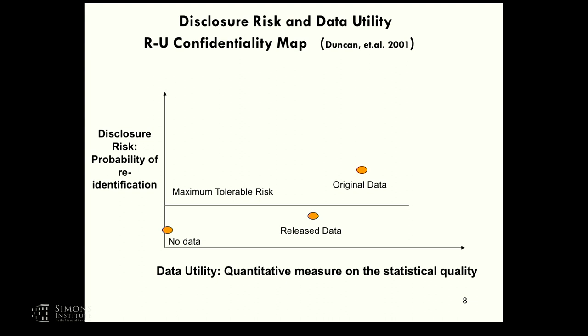The x-axis utility measure is very subjective—we don't know what people are doing with the data, so we use multiple utility measures like chi-square tests, differences for margins, total variation. We might have a number of these maps. Back when I did my PhD, it was all about modeling the probability of re-identification.